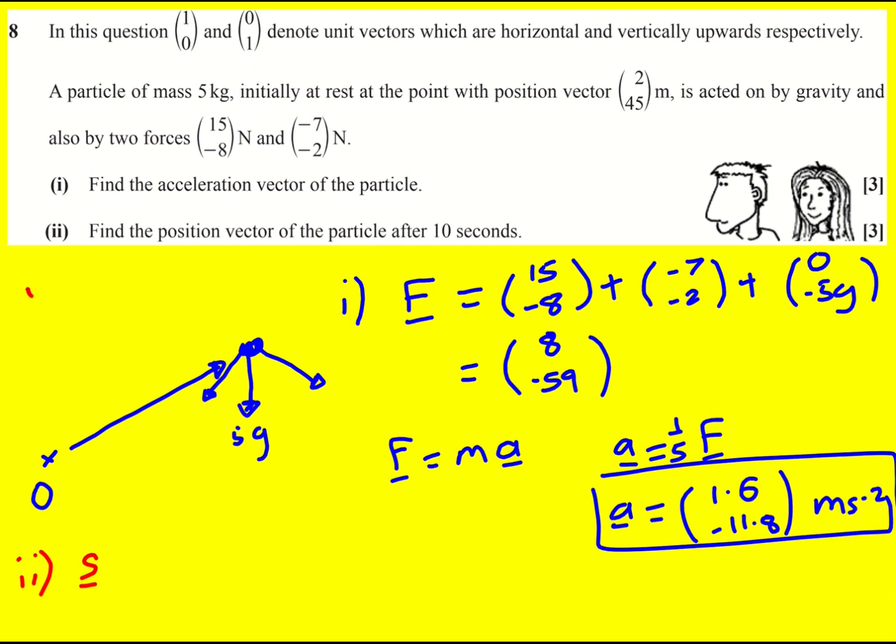We've got u is equal to zero, it's initially at rest, we've got a, we don't have v. I'm just going to put a little tick because we have got it over to the right. And then we've got t equals 10.